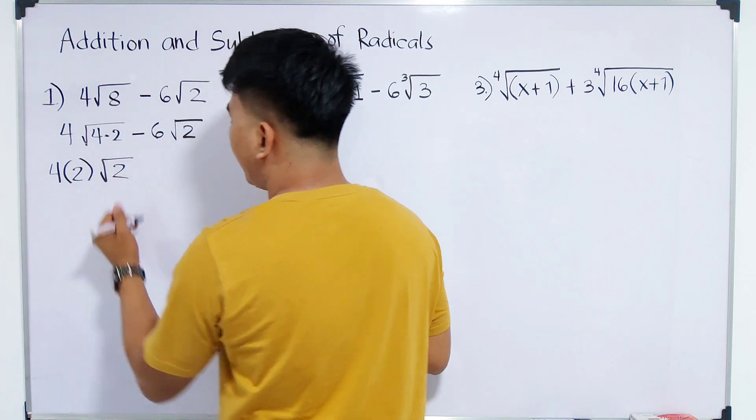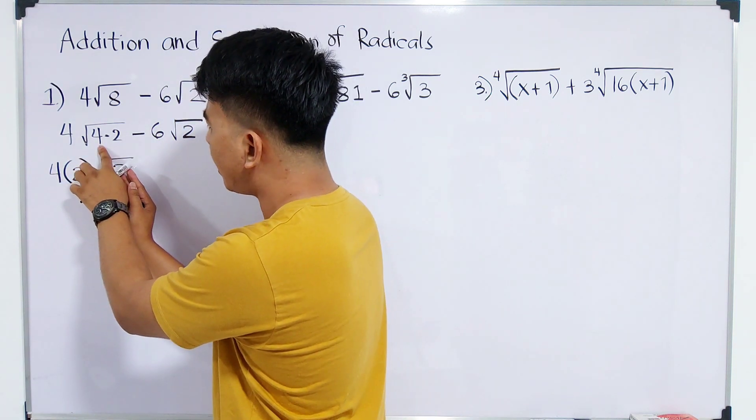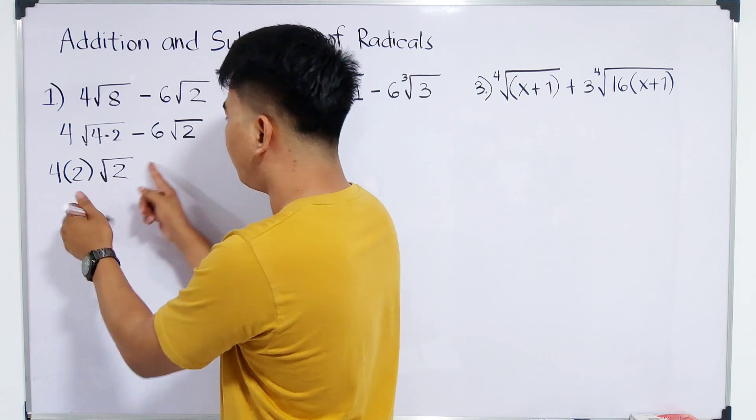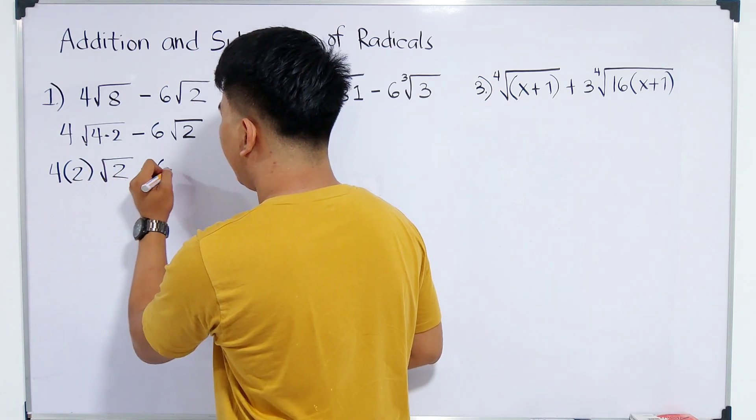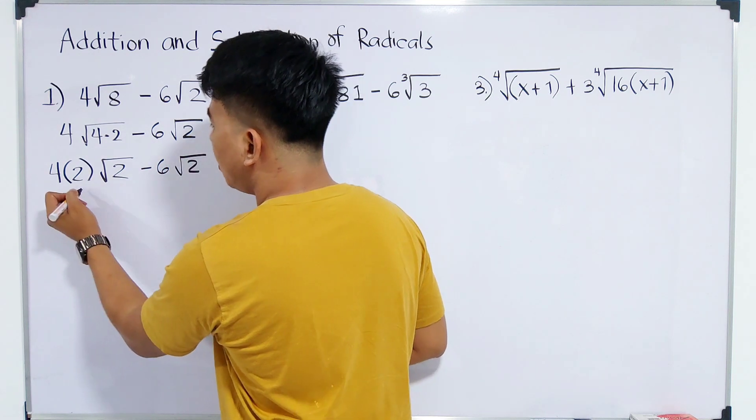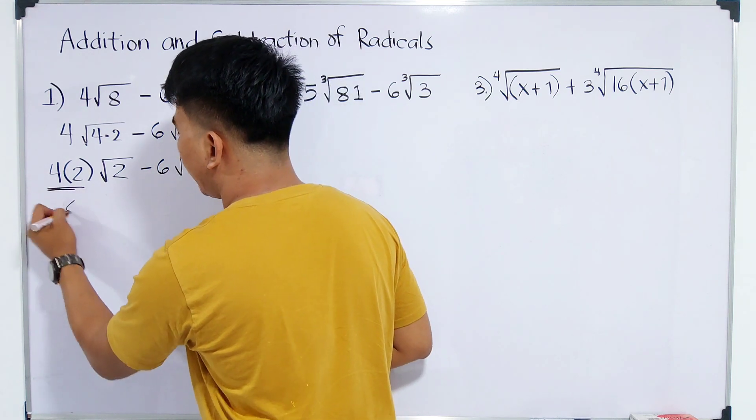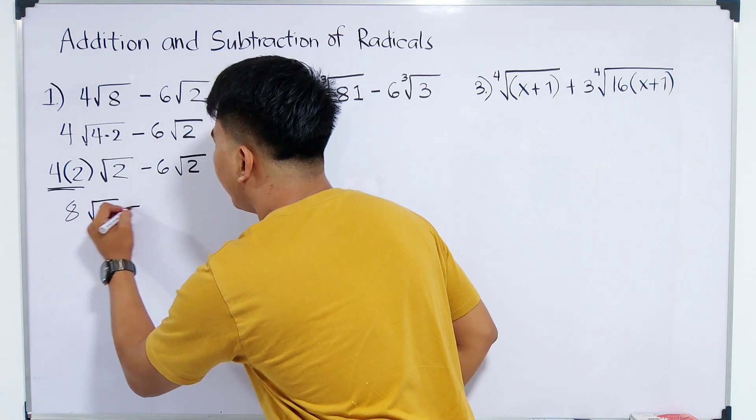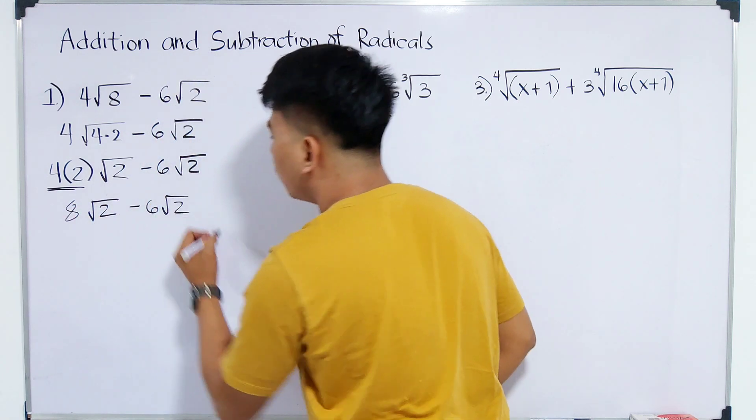And then times the square root of 2. Again, our 4 is extracted as 2, and what remains is the square root of 2.